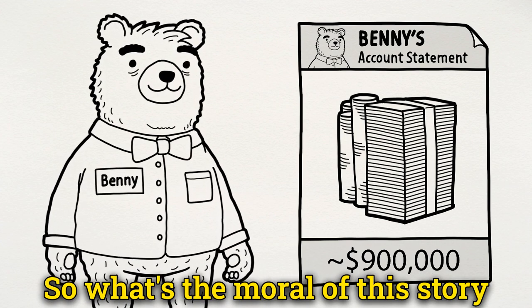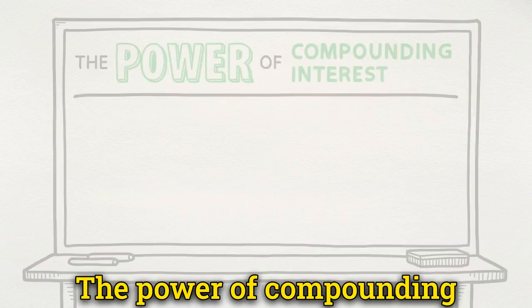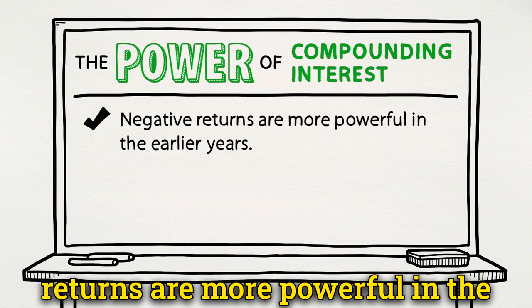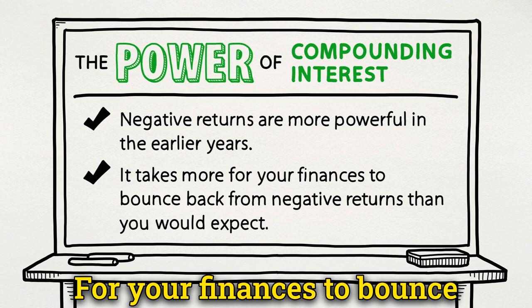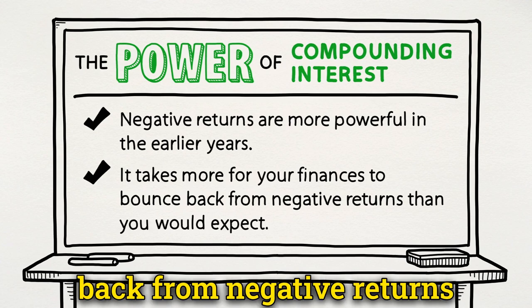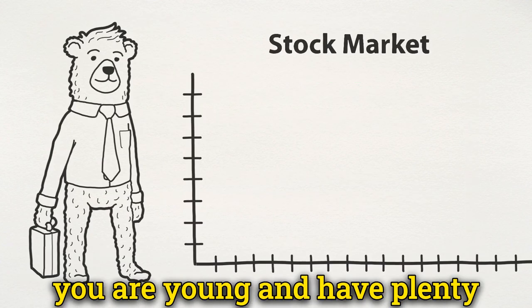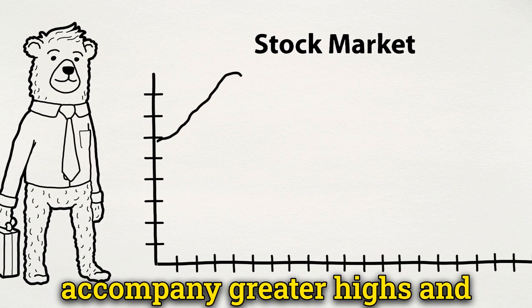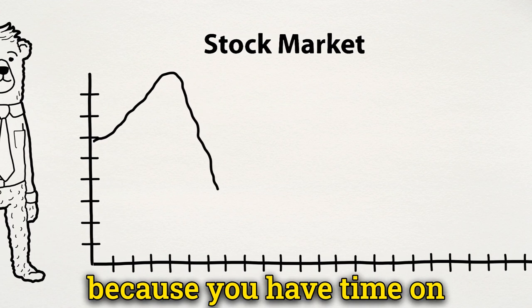So what's the moral of this story? When it comes to investments, sequence of returns matters. The power of compounding interest means that negative returns are more powerful in the earlier years, and it takes more for your finances to bounce back from negative returns than you would expect. When you are young and have plenty of working years ahead of you, you can bear the risks that accompany greater highs and greater lows in the market, because you have time on your side to recuperate.